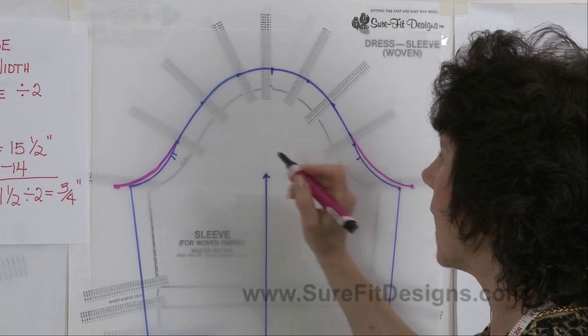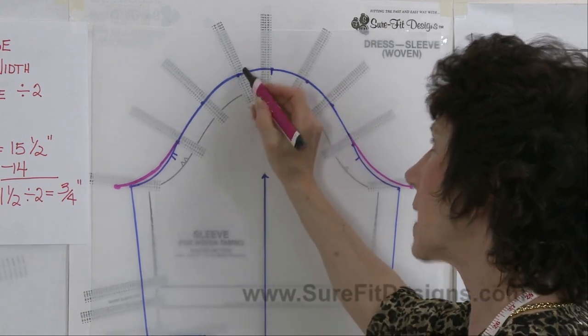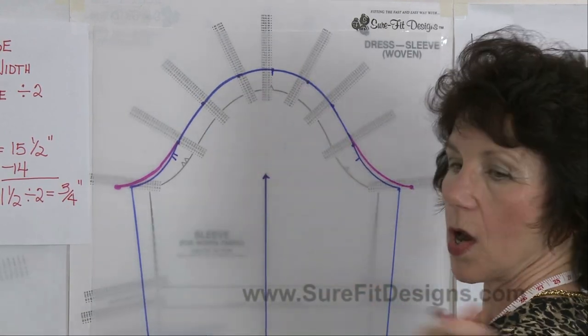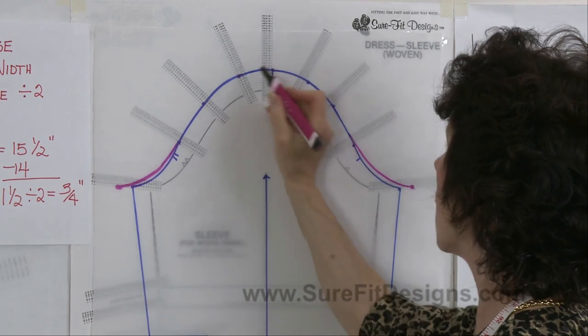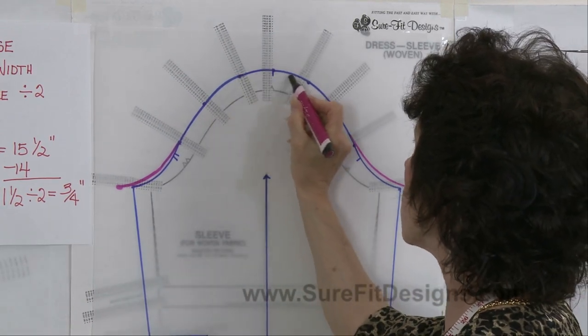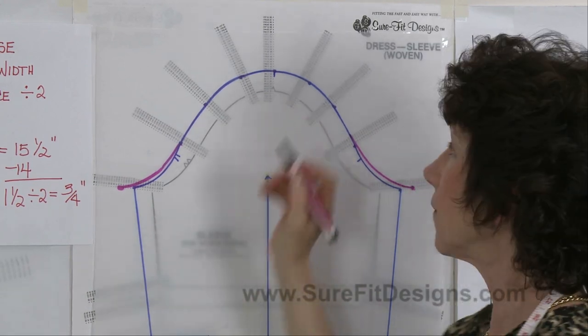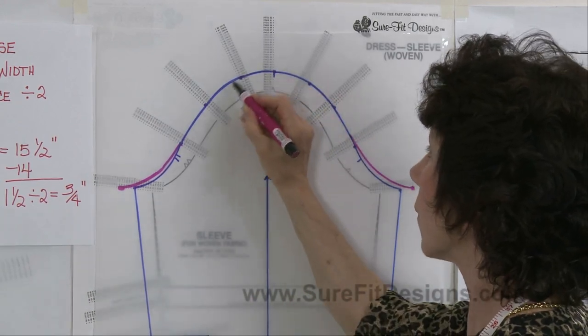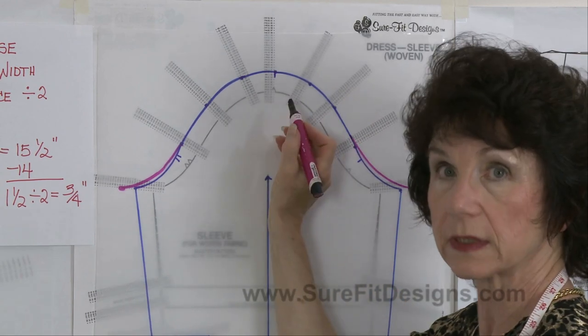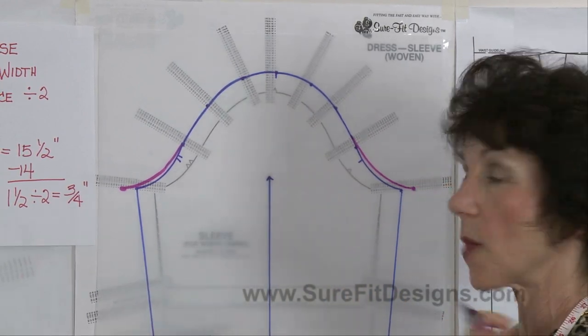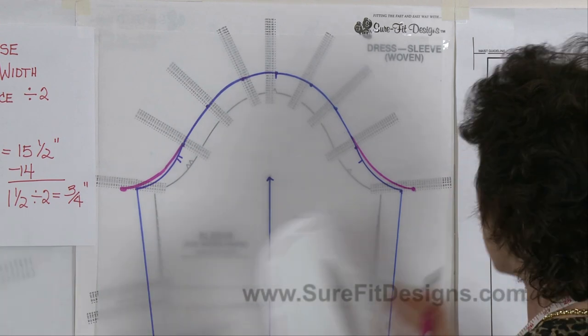Your cap height - sometimes depending on your arm shape at the top of your shoulder, you may want to reduce your cap height just a tiny little hair. But quite often people require this cap height on their sleeve so that it gives them a nice shape over the top of their shoulder.